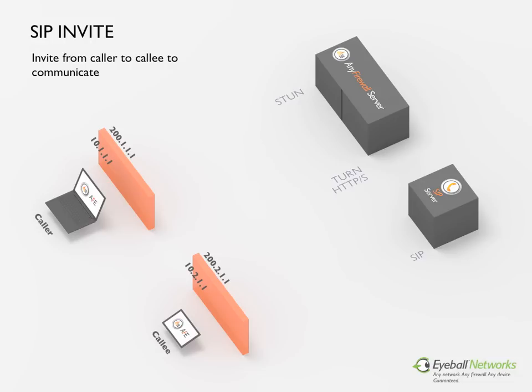Now that the caller VoIP application knows where it is and what connectivity options are available to it, it sends out a SIP invite to the other application, or callee, it wants to talk to. The application does this using the SIP signaling protocol, which goes through standards-based SIP servers in the network — in this case, Eyeball Network's SIP server.